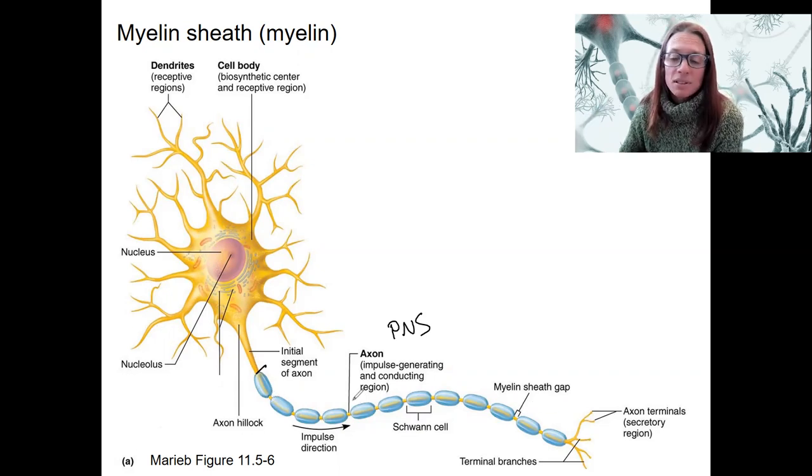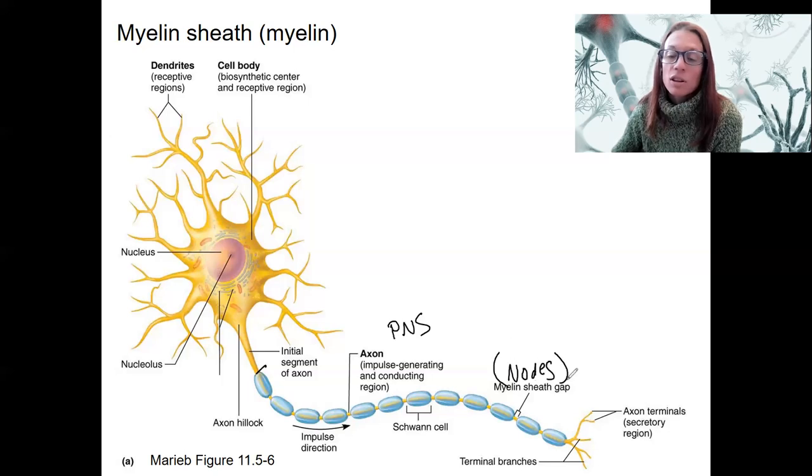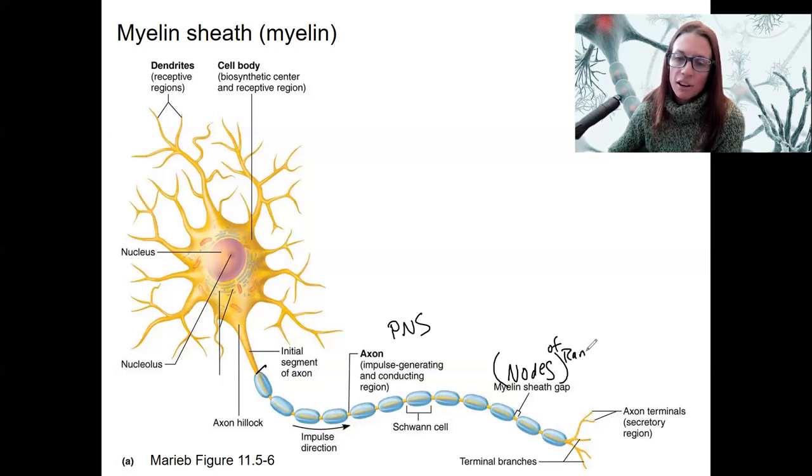And you can see there's gaps in between there or nodes. We will see these more in detail. I'll just tell you now they're called nodes of Ranvier. They're going to be important.